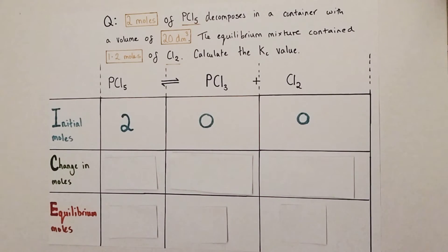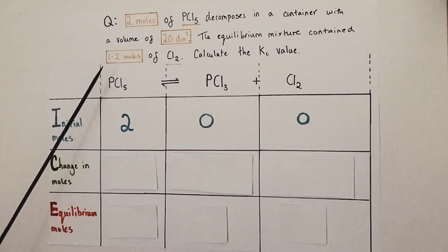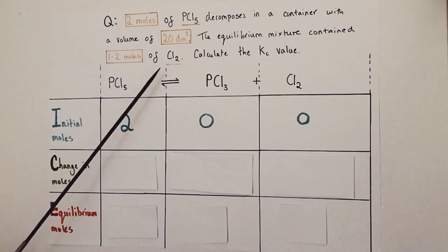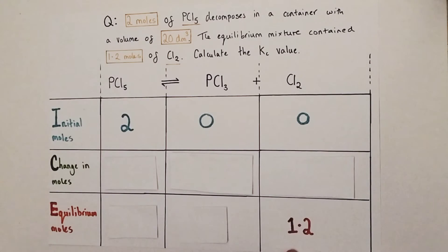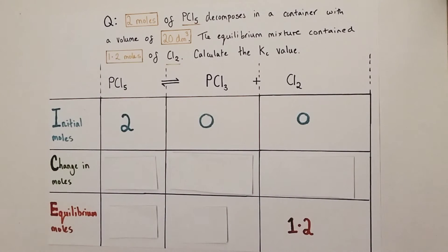To complete the rest of the table we look at what they've told us in the question. They've told us that at equilibrium we would have formed 1.2 moles of chlorine. So we now know one of the equilibrium mole parameters — we know how much chlorine was formed, so this is 1.2. This brings us to the C and the E in the ICE method: the changing moles and the equilibrium moles stages.